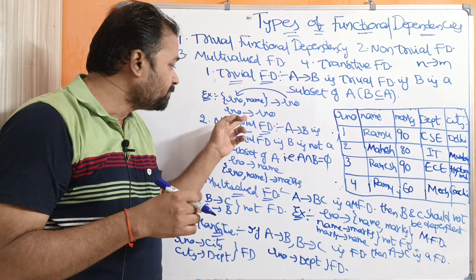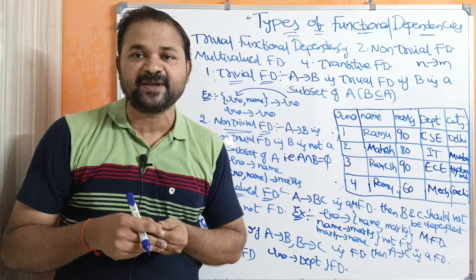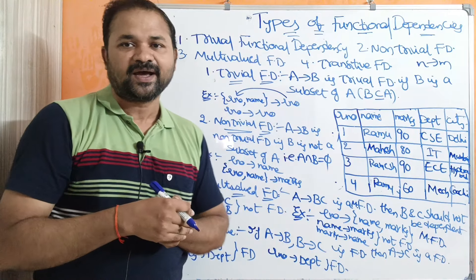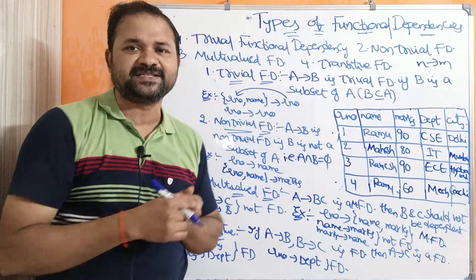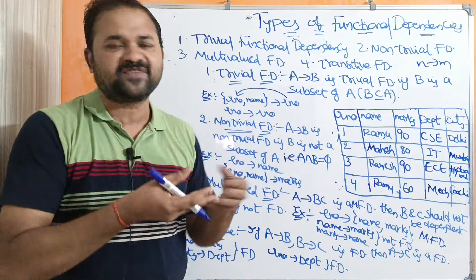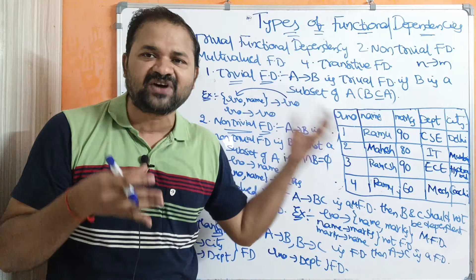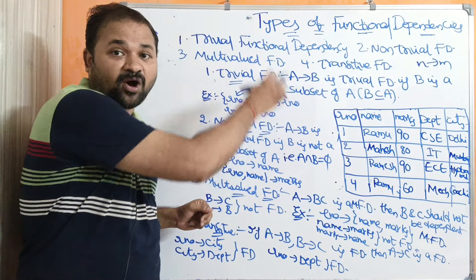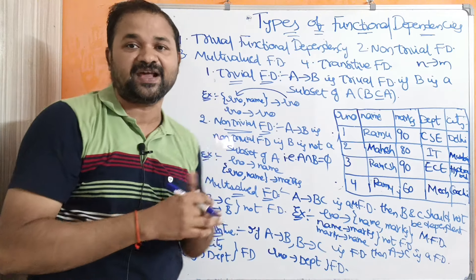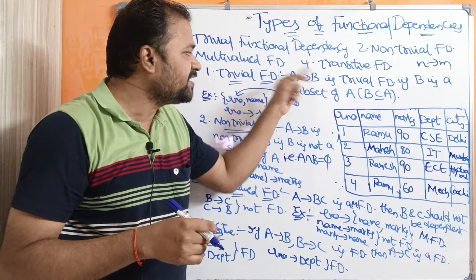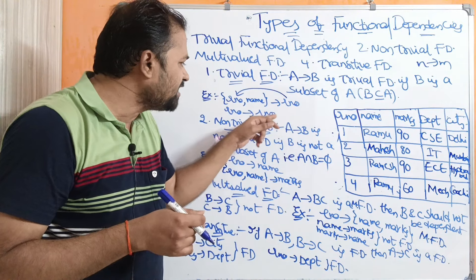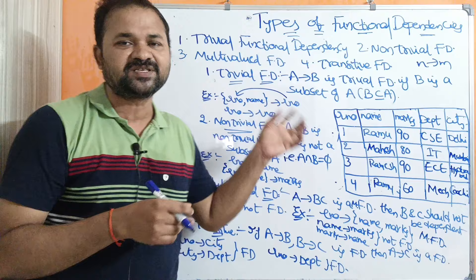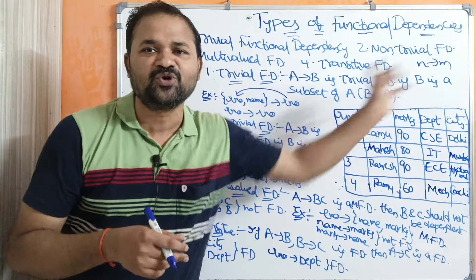Likewise, roll number → roll number is a trivial functional dependency, because we are supplying the roll number information, so we can easily determine the roll number. For trivial functional dependency, there is no need to check the table to verify whether it is correct or not, because trivial functional dependency is always correct. The dependent value B is always available in the determinant A. So we can say that trivial functional dependency is a useless functional dependency — everything is available in A itself, so there is no need to check the table.